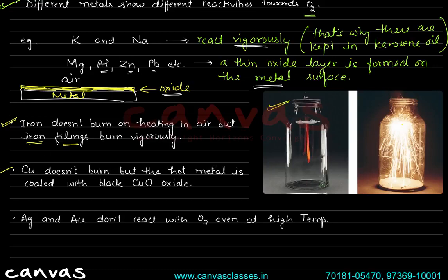Copper doesn't burn, but when copper is heated in the presence of air, a black copper oxide coating forms on the surface of the hot metal. Silver and gold do not react with oxygen even at high temperatures. So we can see that different metals react differently with air.